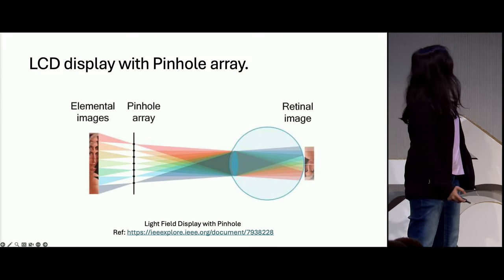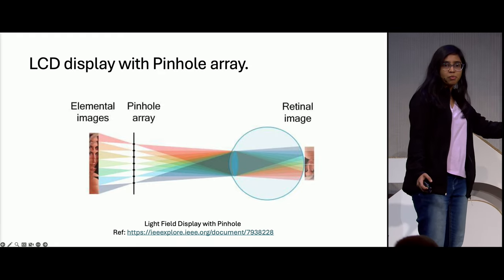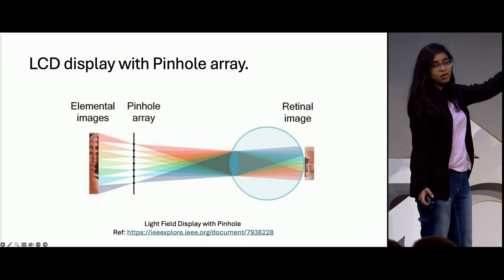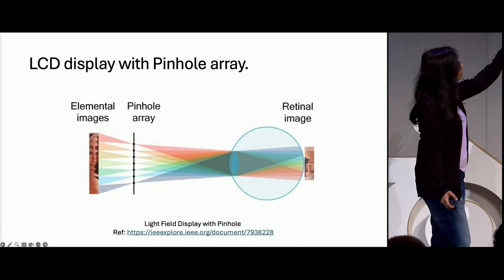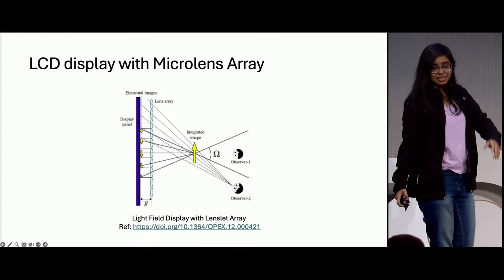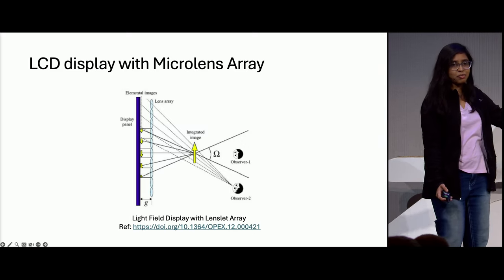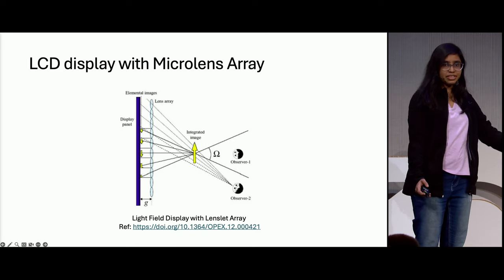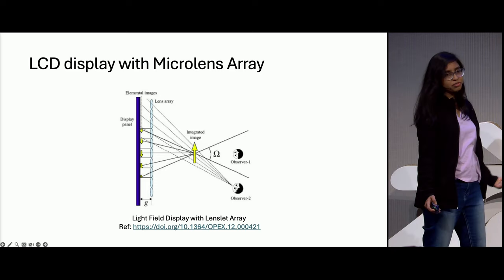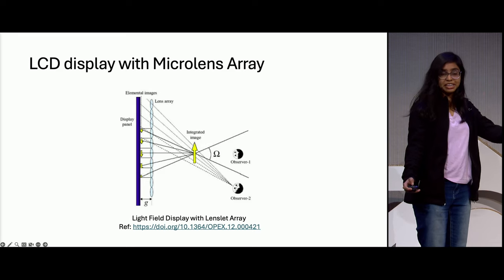What is an LCD display with a pinhole array? Basically, we place a pinhole array on top of an LCD display and it reconstructs the complete light field on the surface, which in turn allows a human eye to see a clear image. For the microlens array, we replace the pinhole array with a microlens array placed on top of the display and it acts as a light field display.